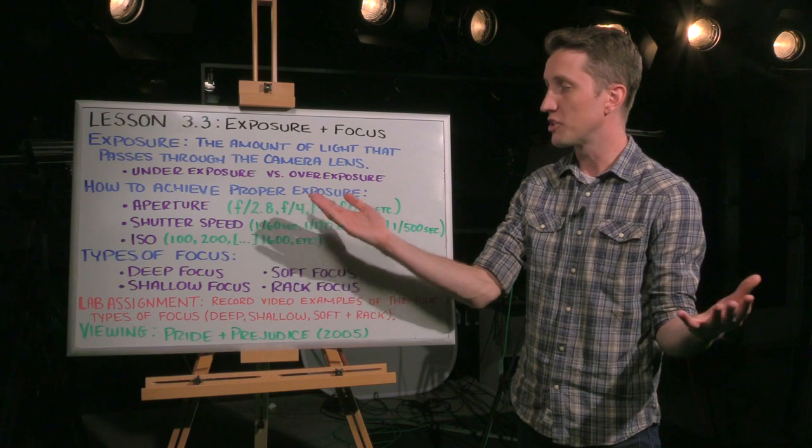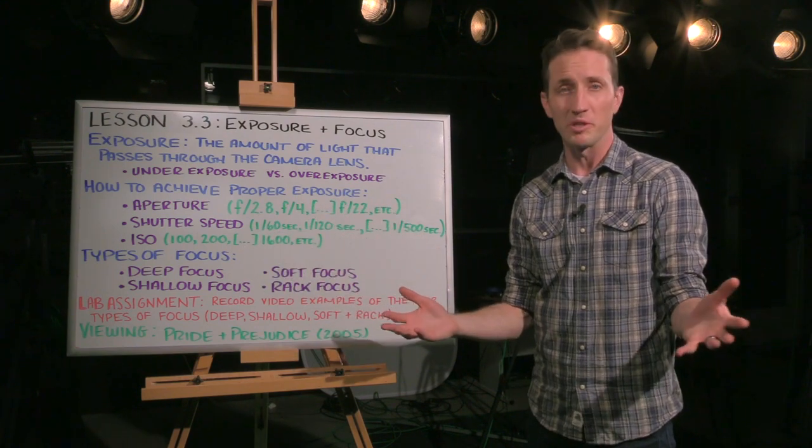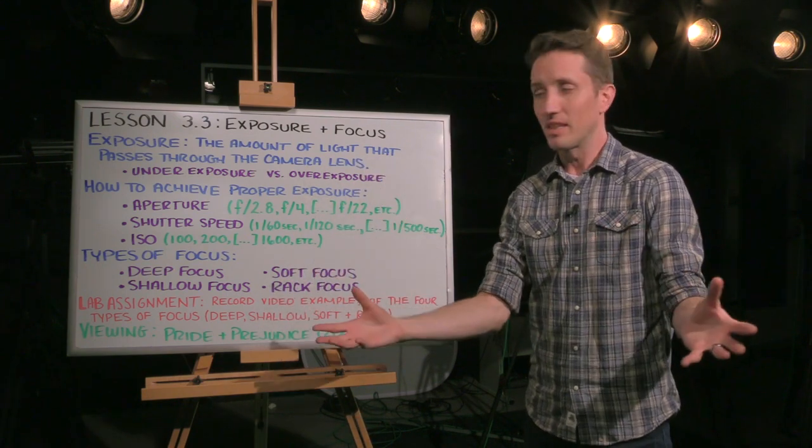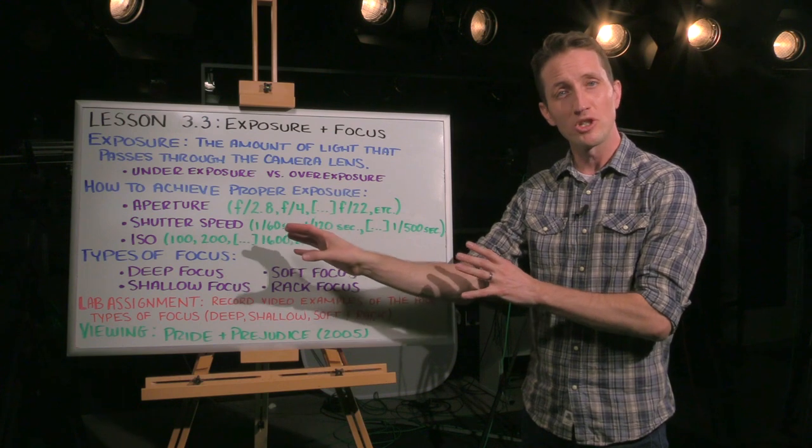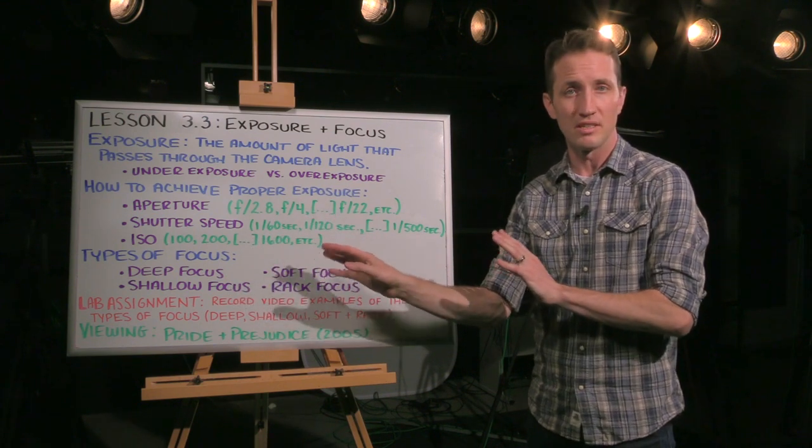So how do we achieve proper exposure? Well, in order to achieve proper exposure, what you're really focusing on is a balance between the camera's aperture, shutter speed, and ISO. So let's go through each of these individually.